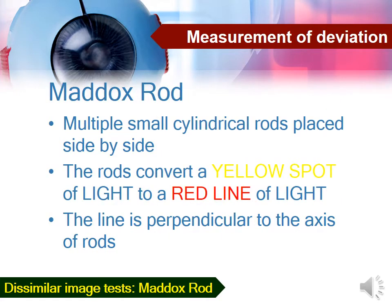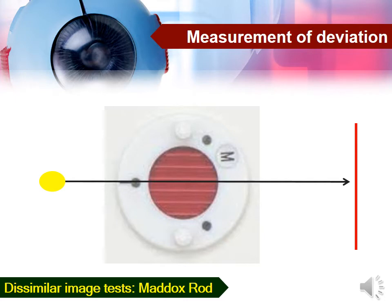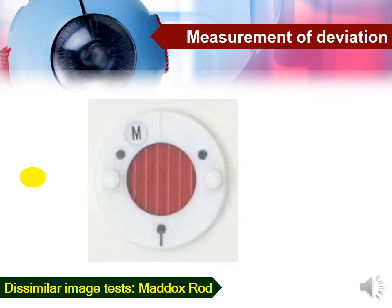The Maddox rod is composed of multiple cylindrical rods placed side by side. The rods convert a white or yellow spot of light into a red line of light, which is perpendicular to the axis of the rod. So if the Maddox rod is placed with the rods arranged horizontally in front of the patient's eye, the patient will see a vertical red line. If the rods are arranged vertically, the patient will see a horizontal red line.